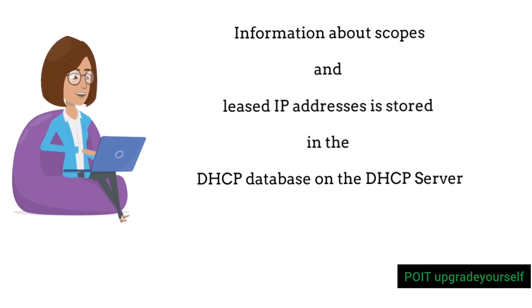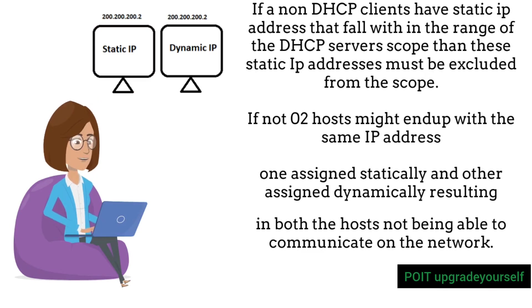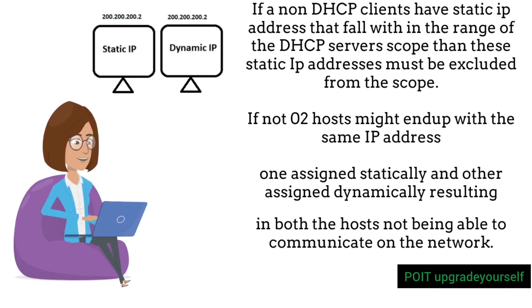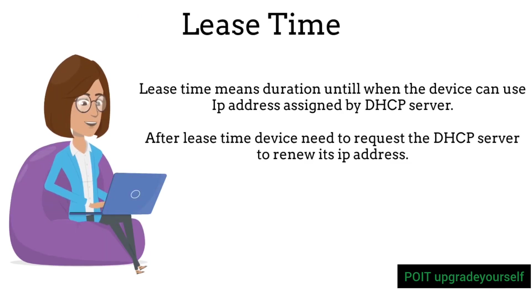If non-DHCP clients have static IP addresses that fall within the range of the DHCP server's scope, then these static IP addresses must be excluded from the scope. If not, two hosts might end up with the same IP address — one assigned statically and the other assigned dynamically — resulting in both hosts not being able to communicate on the network.